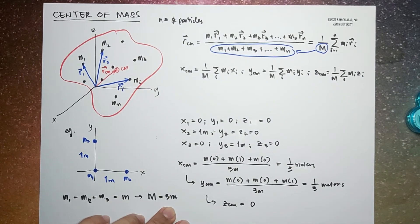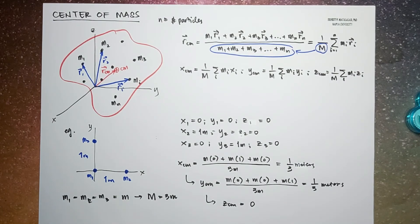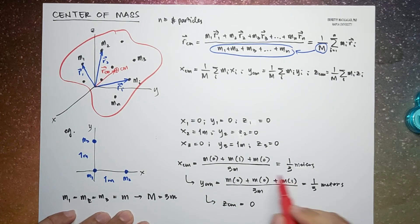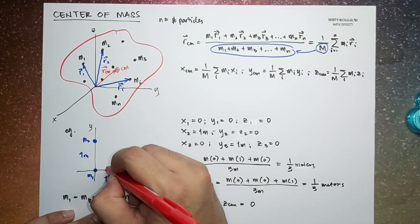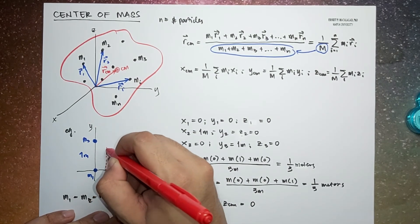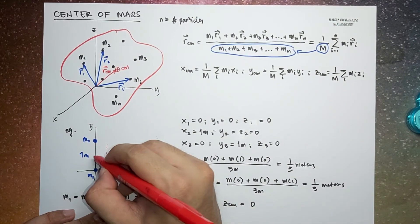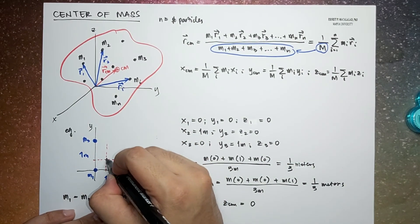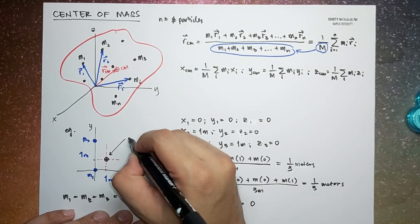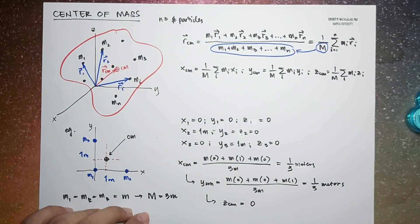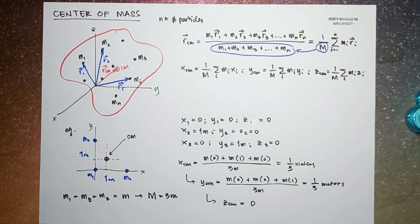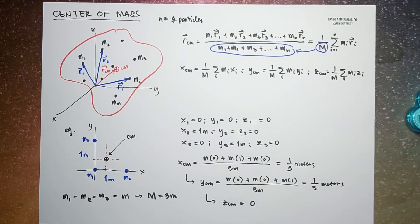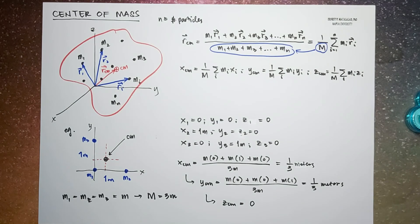If we identify the center of mass on our diagram, you can see the x-component is about 1/3 meter and the y-component is about 1/3 meter — that's where the center of mass of the system is located. That's how you generally calculate the center of mass of a system of particles.